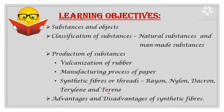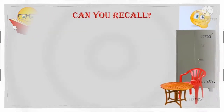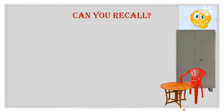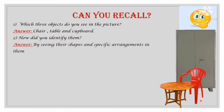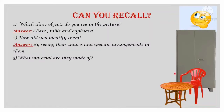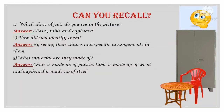Can you recall, students — which three objects do you see in the picture? Yes, chair, table, and cupboard. How did you identify them? By seeing the shapes and specific arrangements in them. What material are they made of? The chair is made of plastic, the table is made of wood, and the cupboard is made of steel.